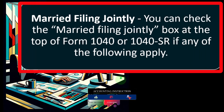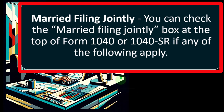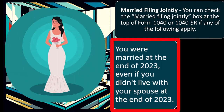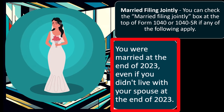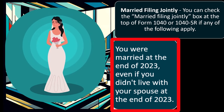Married filing jointly is the default if you're married and is usually more beneficial than single. However, when refundable credits are involved — such as the earned income credit, child tax credit, or education credits — it could actually work out to be less favorable in some cases, which we'll discuss later. You can check the married filing jointly box on Form 1040 or 1040-SR if you were married at the end of 2023.